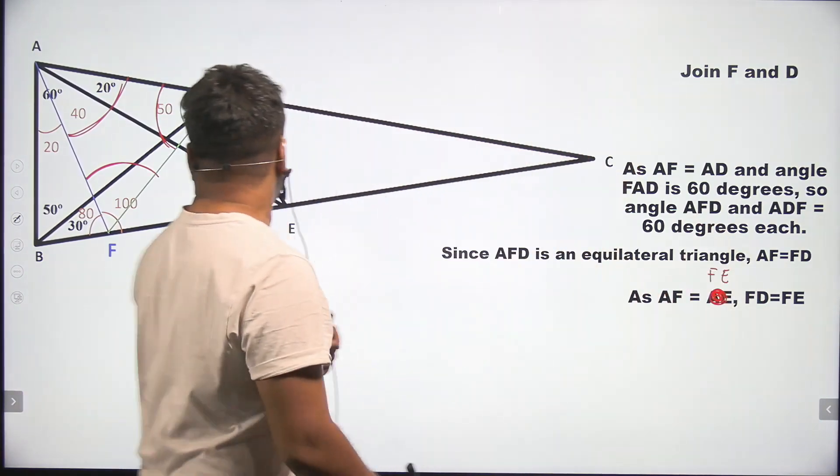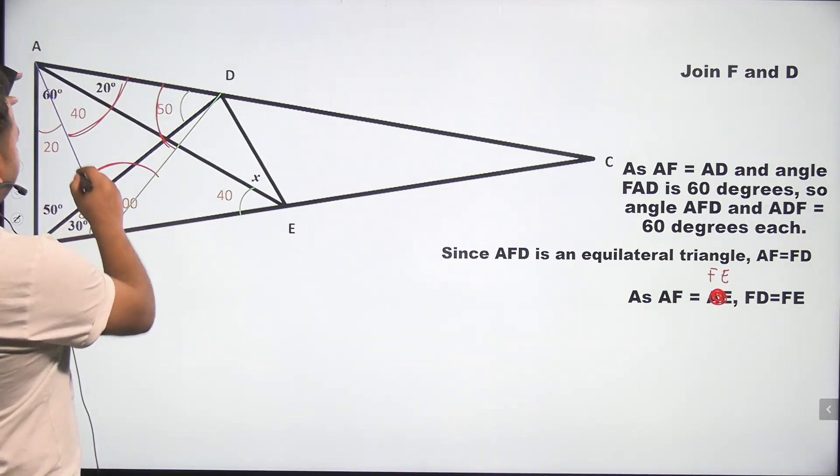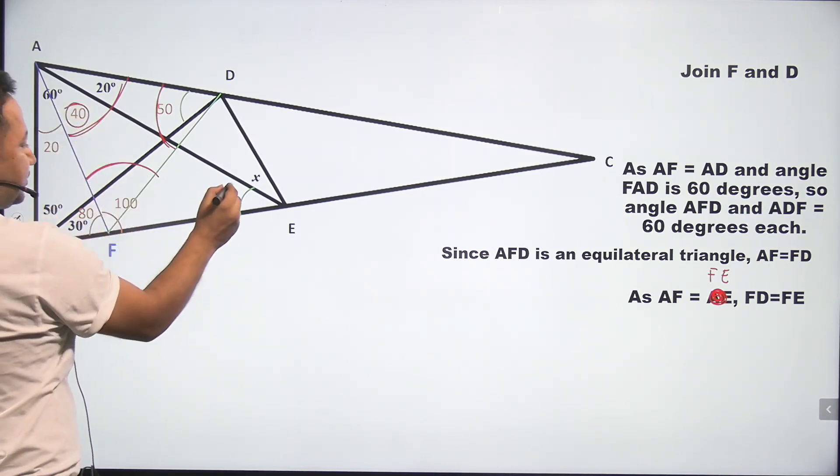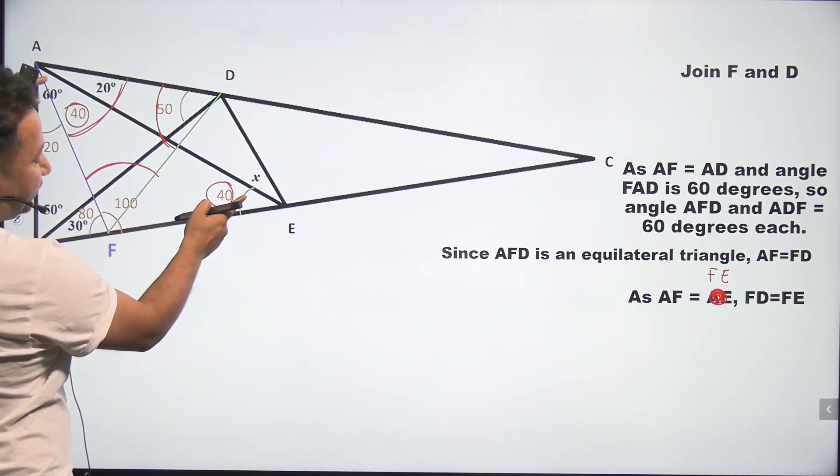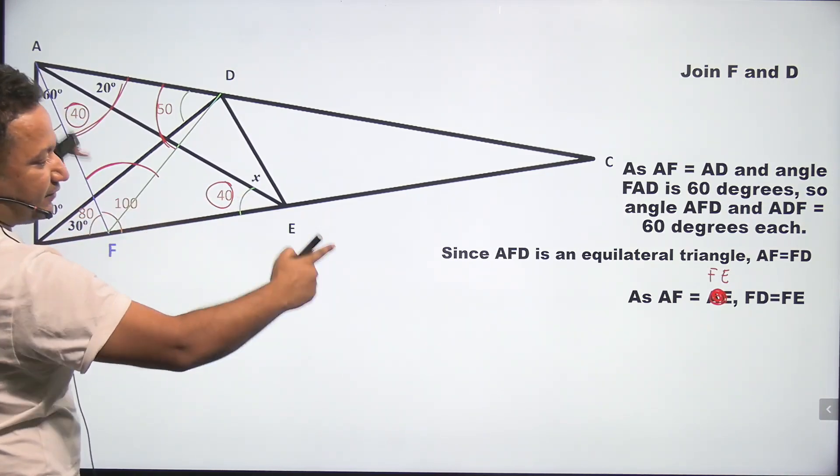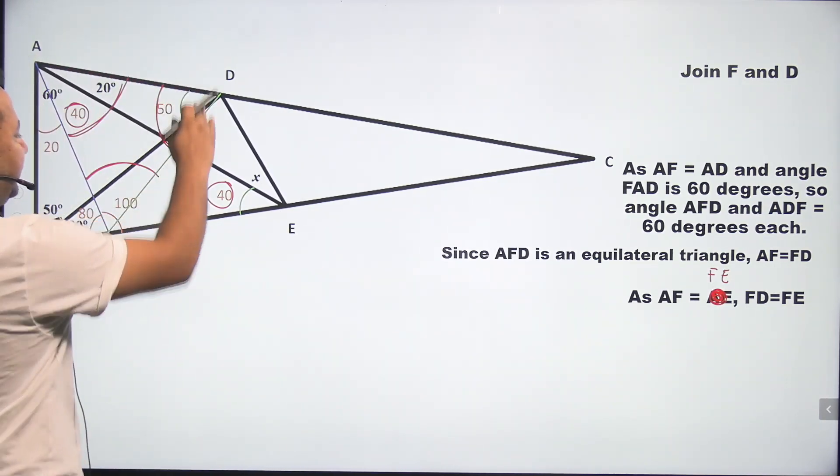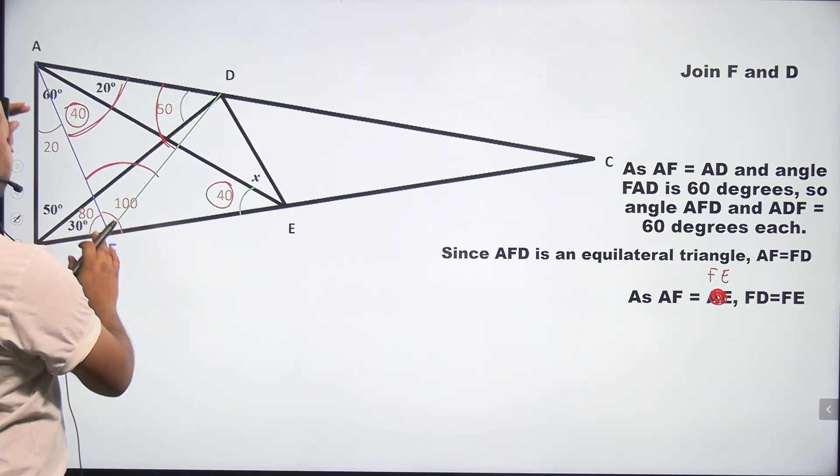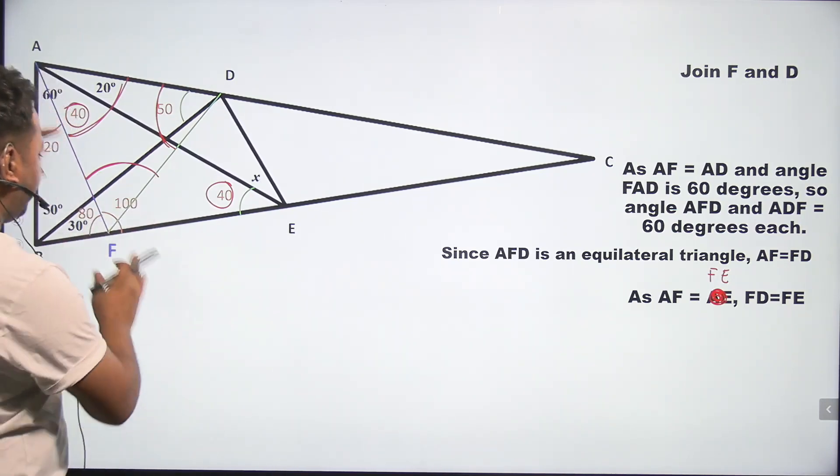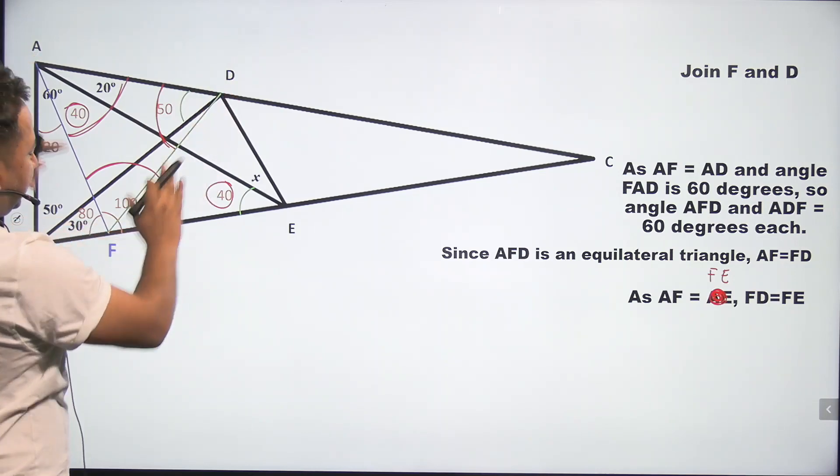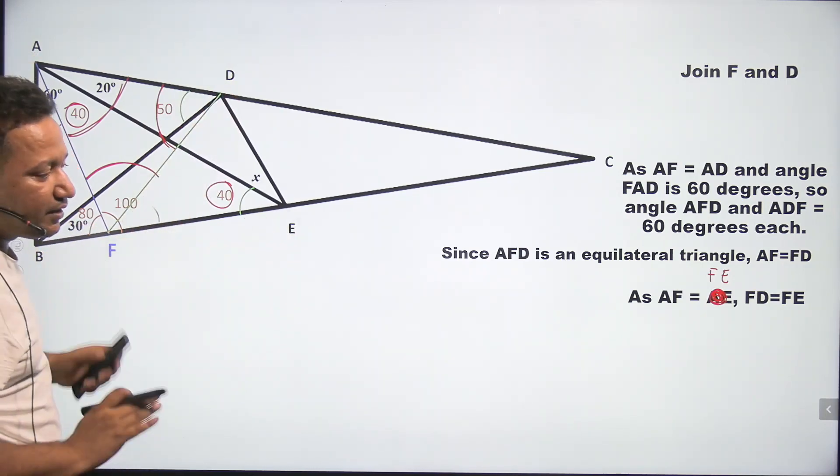As AF is equal to FE, I can say that FD is equal to FE. Because I'm repeating, AF and FE are equal and AF and FD are also equal. That means FD and FE will also be equal.